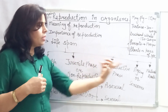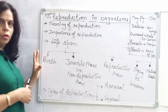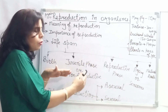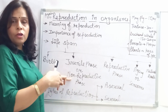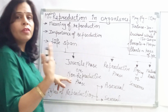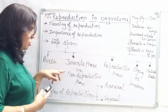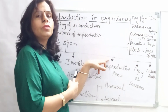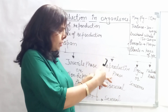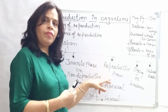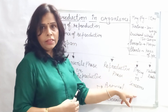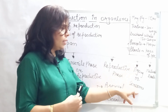Let us understand the various phases within lifespan. First is birth. Then growth — that is the juvenile phase, the non-reproductive phase, where the organism cannot produce offspring; it is just growing and attaining maturity. After the juvenile phase, the organism enters the reproductive phase, where it can give birth to young ones. After some time, the reproductive phase declines — this process is known as aging in animals and senescence in plants. After aging or senescence, the organism undergoes death.